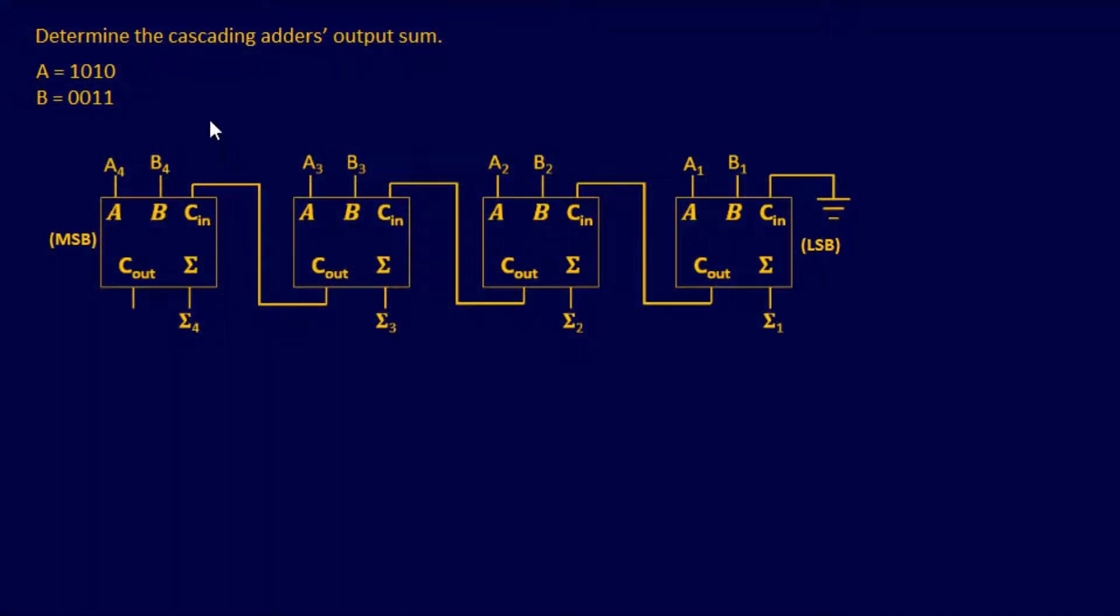Let's jump into our first example. We have determined that cascading adders output sum. So right now we have four full adders and they're in a cascading configuration. And we want to determine the sum of an input of A and an input of B. Let's do two things off the start.